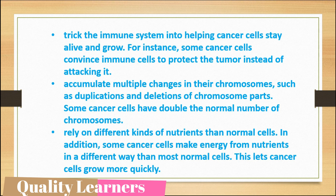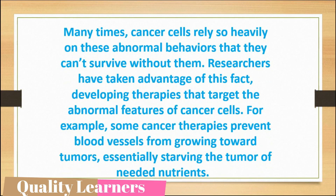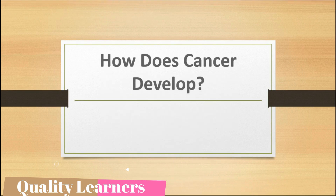Some cancer cells make energy from nutrients in a different way than normal cells, which lets cancer cells grow more quickly. Cancer cells rely so heavily on this abnormal behavior that they can't survive without it. Researchers have taken advantage of this fact, developing therapies that target the abnormal features of cancer cells. For example, some cancer therapies prevent blood vessels from growing towards tumors, essentially starving the tumors of needed nutrients.